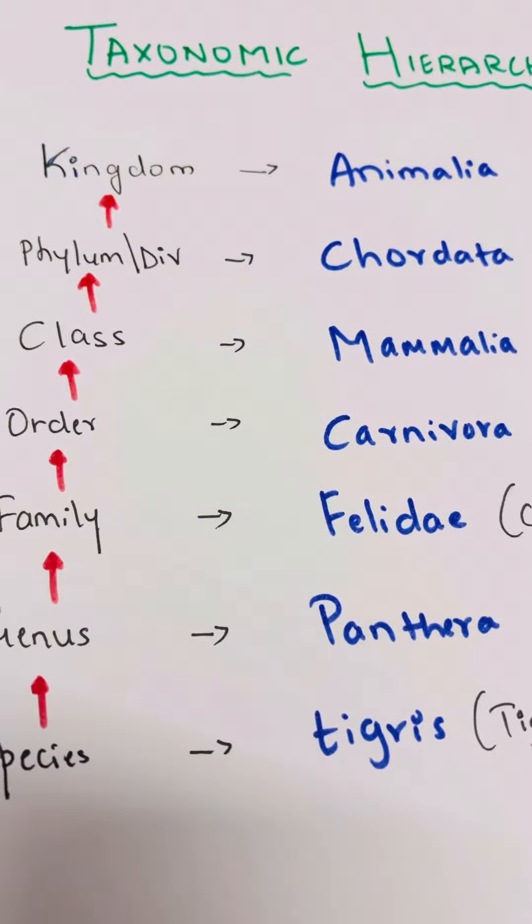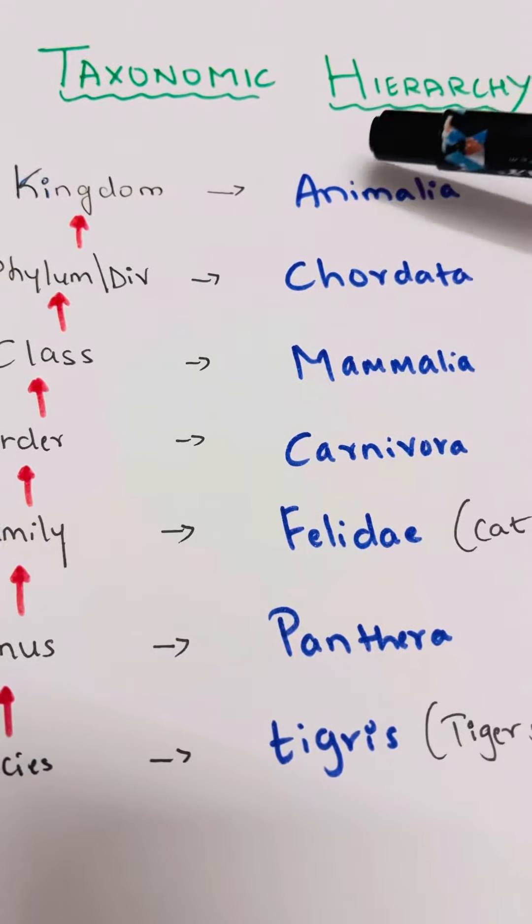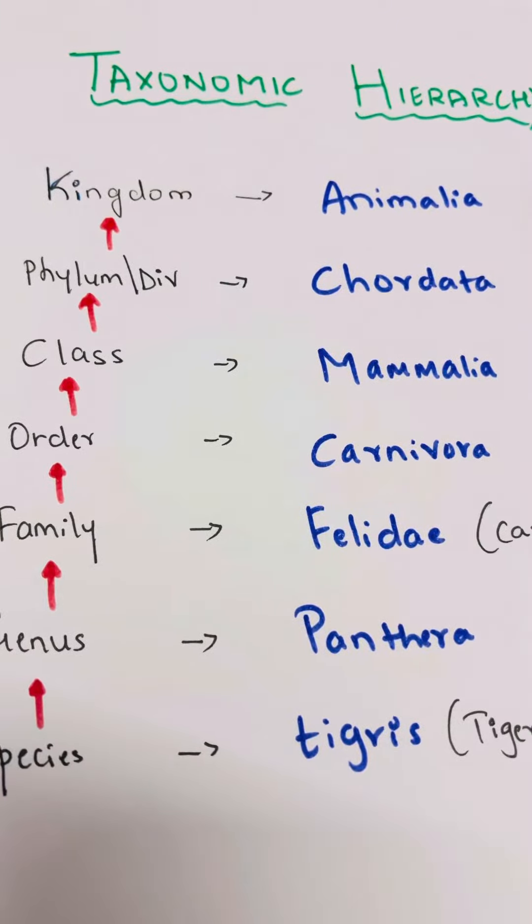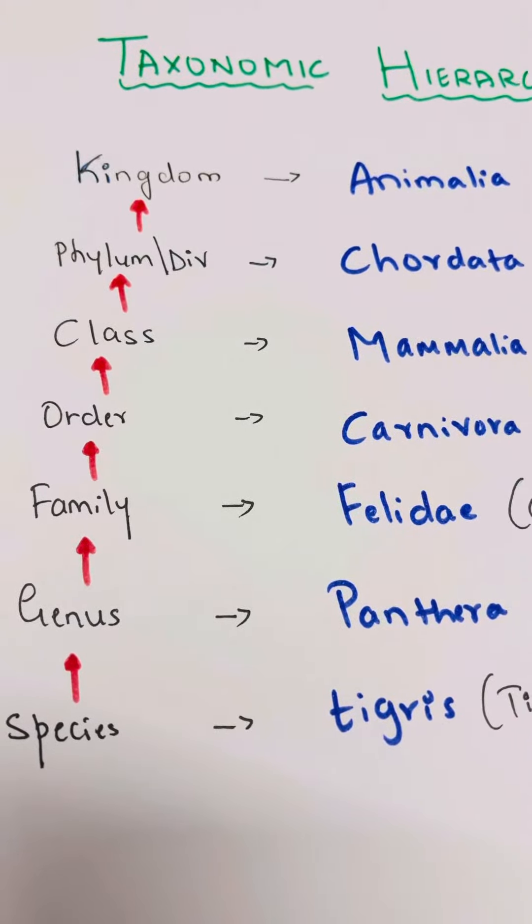Hi everyone, welcome to my YouTube channel at Need Biology. So children, now I'm here with you to discuss taxonomic hierarchy. From the first chapter, that is Living World, as you know there are seven taxonomic categories.